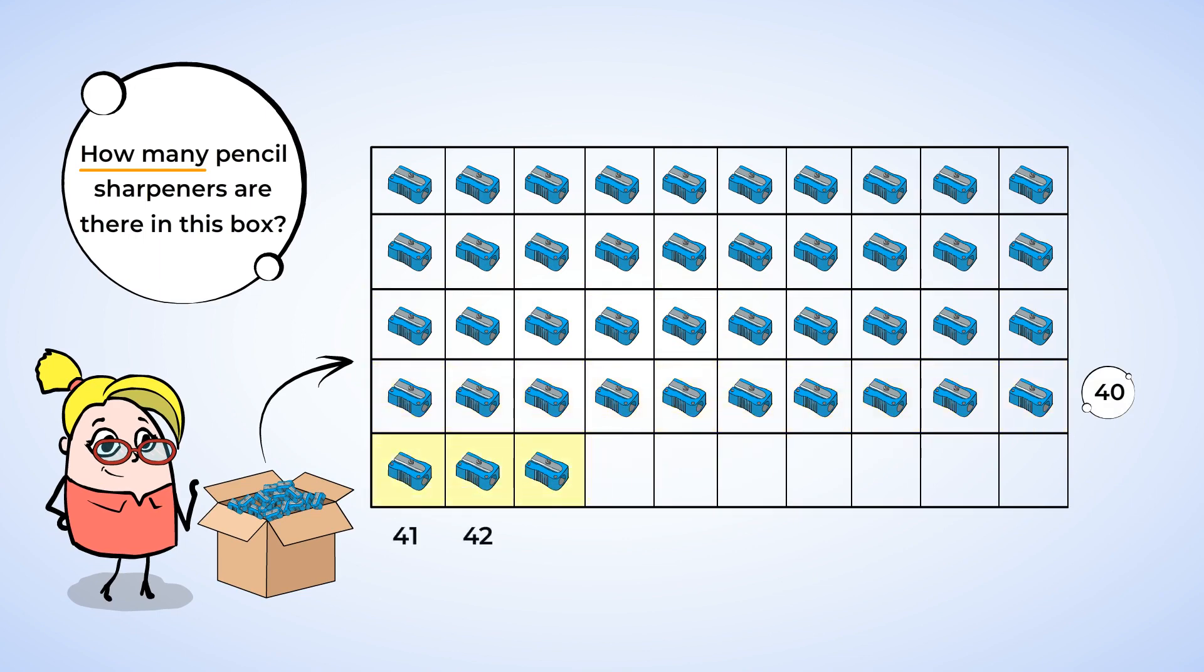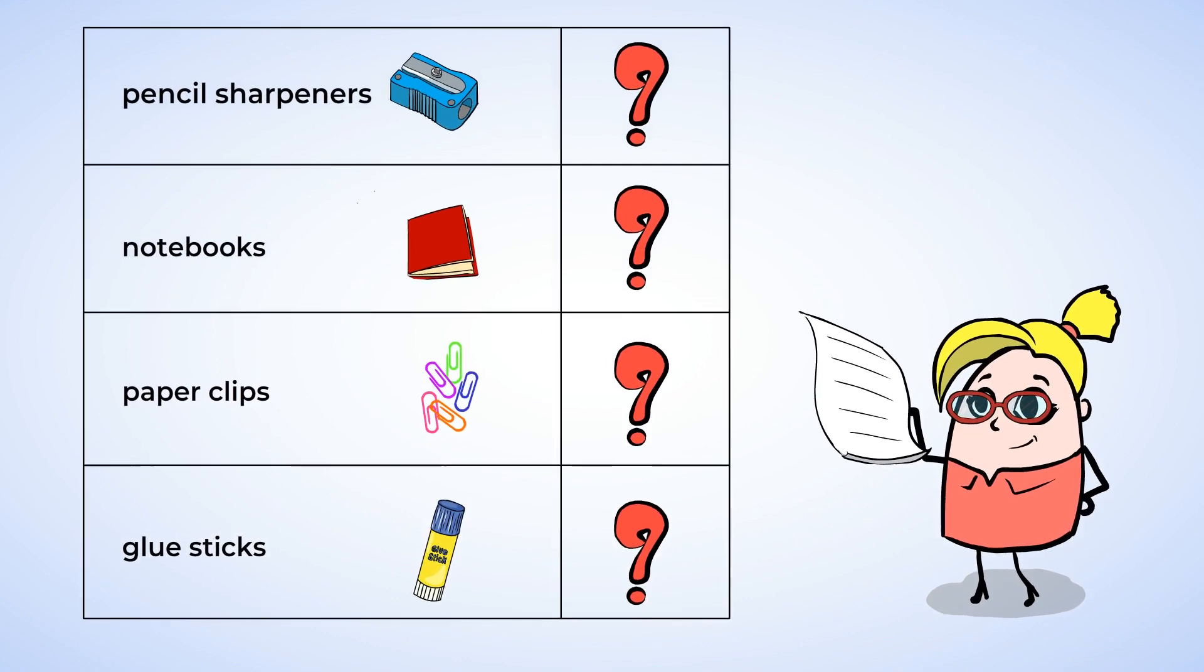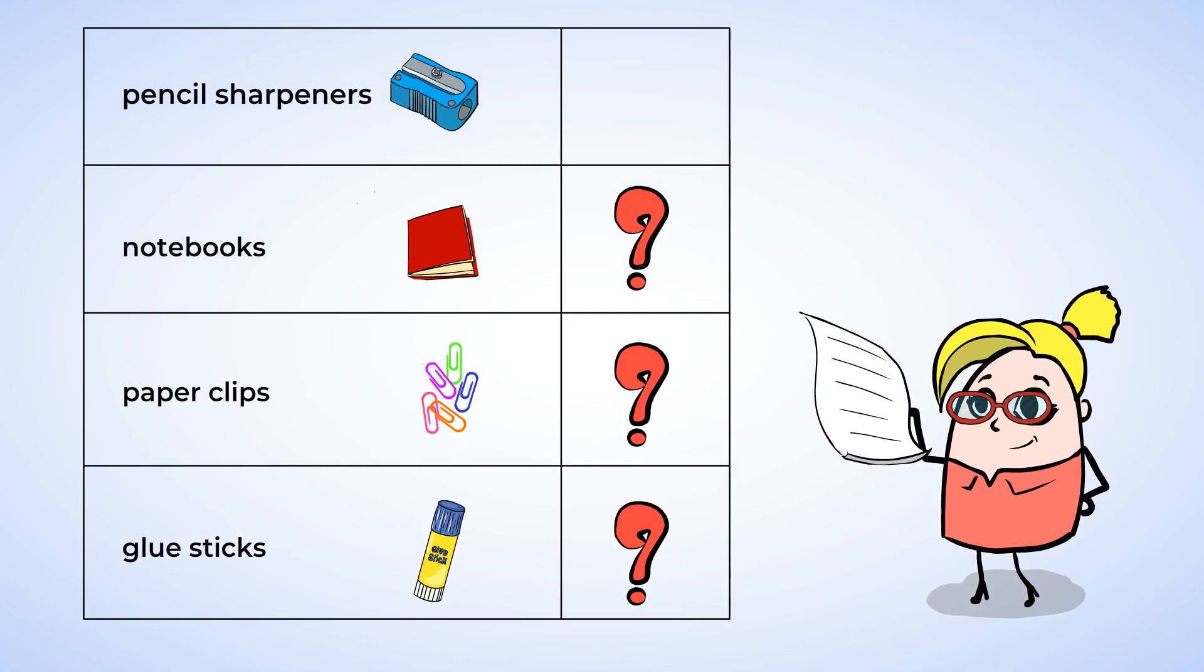41, 42, 43. There are 43 pencil sharpeners. So we write a 4 and then a 3. Write the number 43 on the list next to where it says pencil sharpeners.